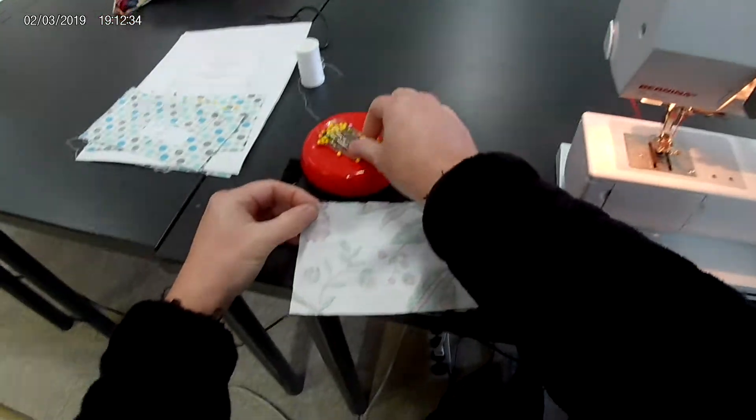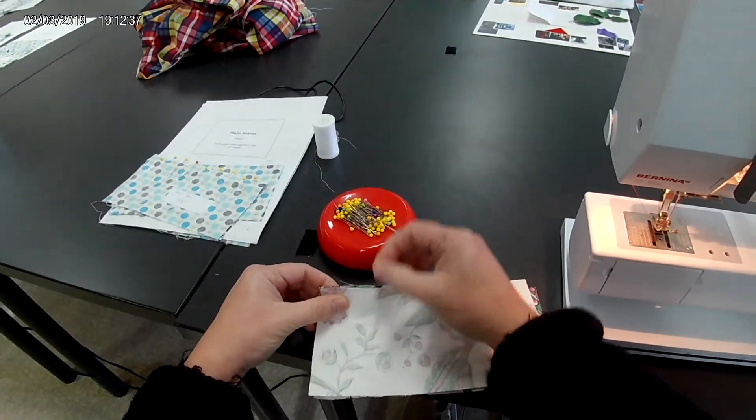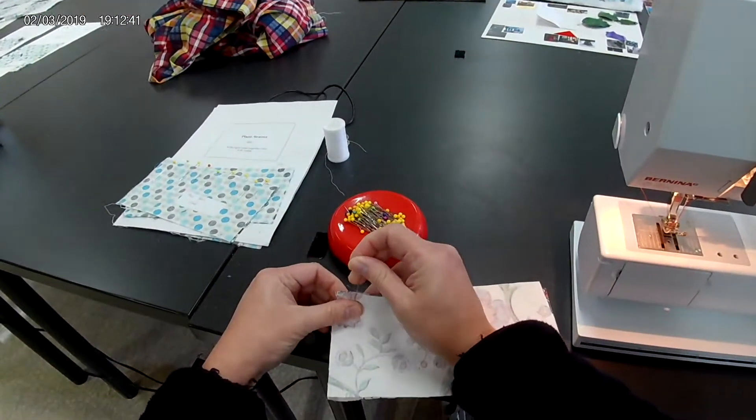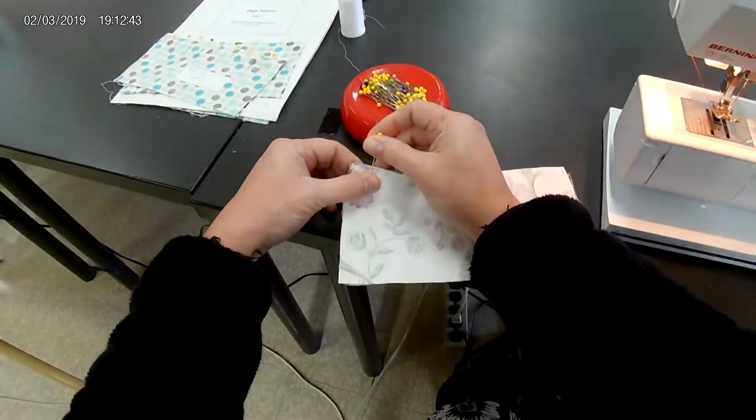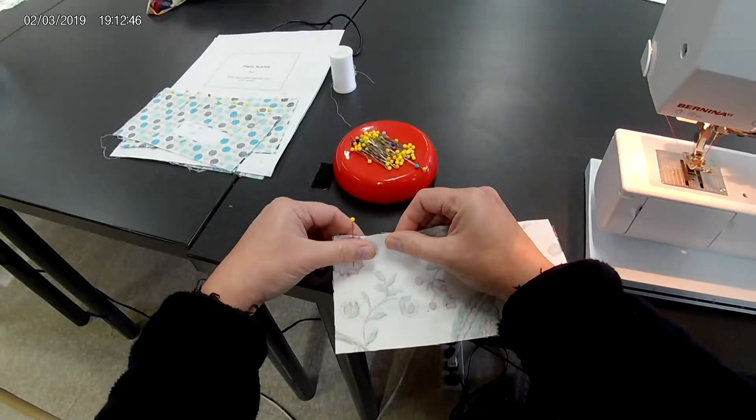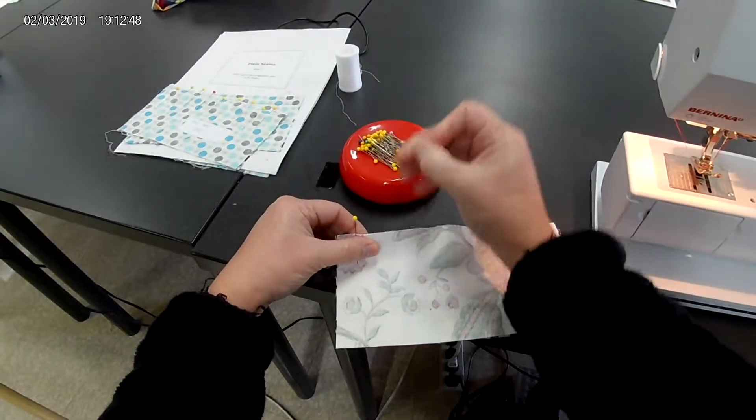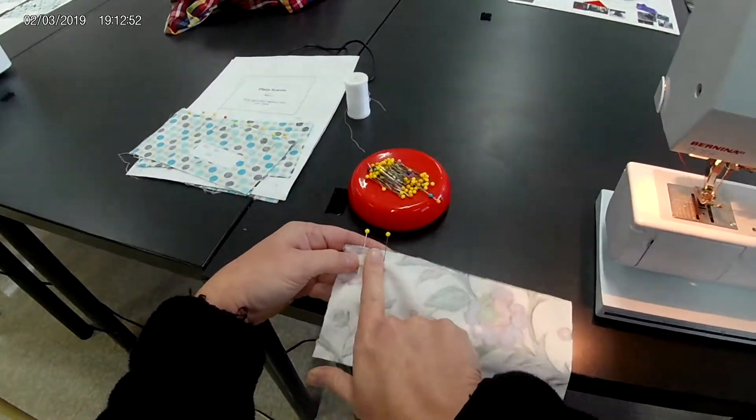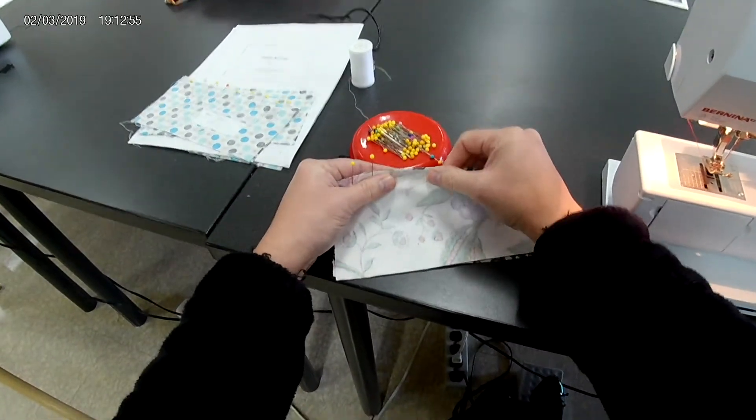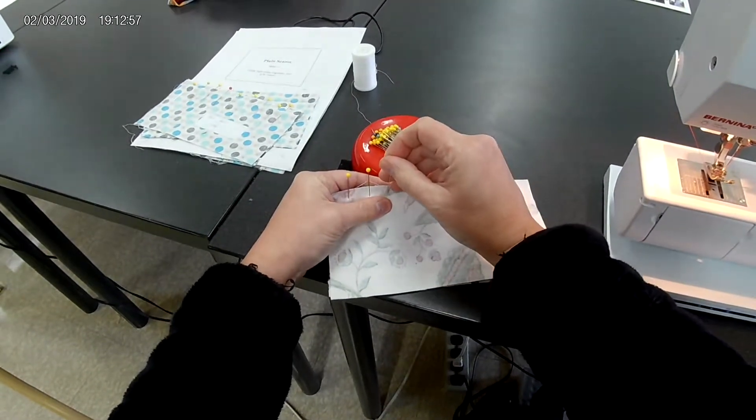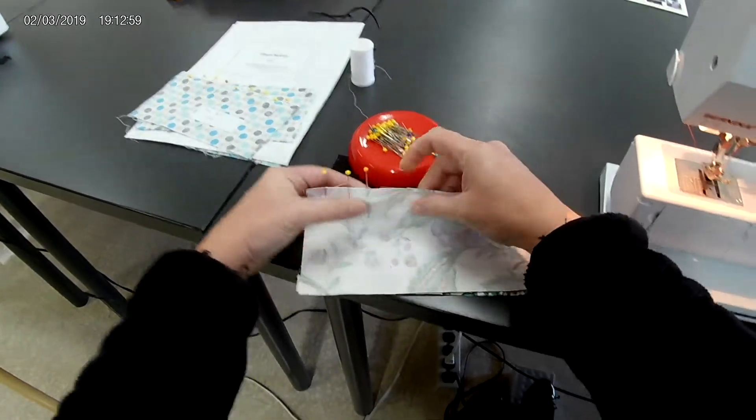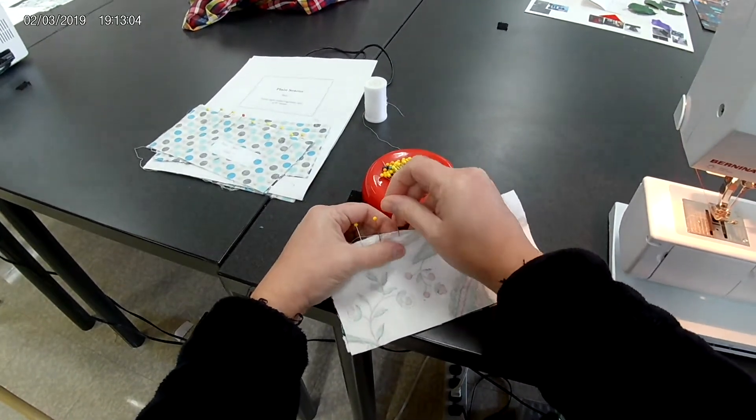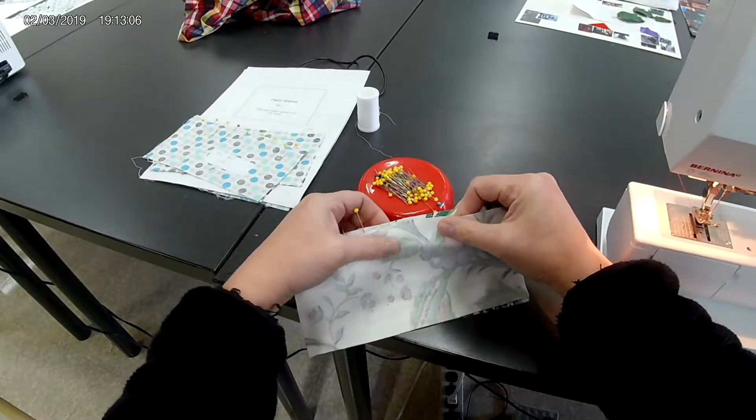Take your pins and put raw edges together with your pretty sides or right sides facing each other. Insert the pin down and then up, move your thumb over, insert the pin down and up so that your pins are about a finger distance apart. You will continue pinning your sample all the way across to the other end.